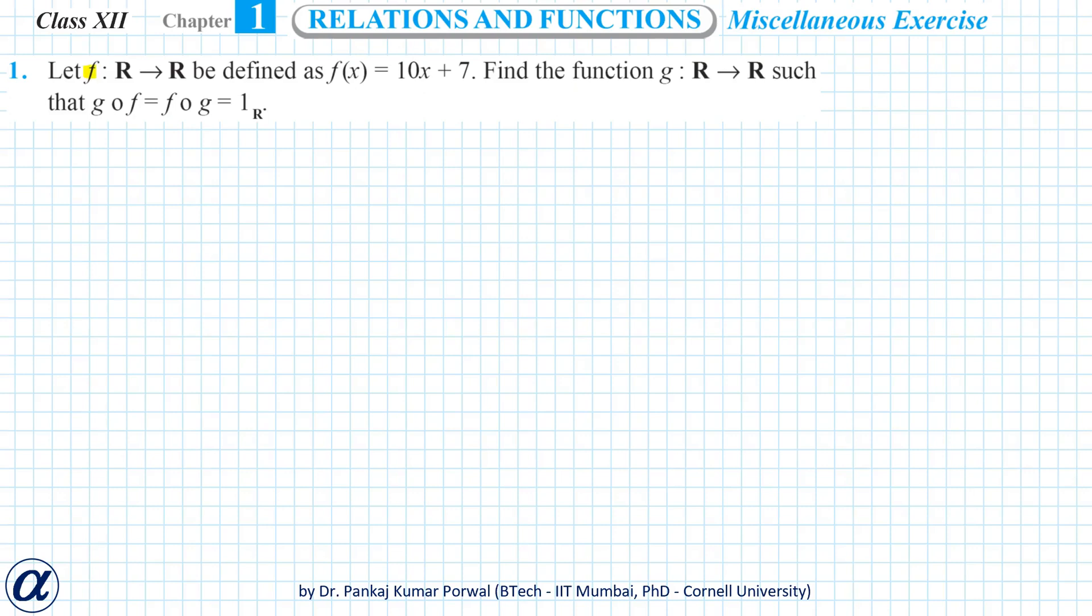In this question, we are given a function f from R to R defined as f(x) equals 10x plus 7, and we want to find a function g from R to R such that g of f equals f of g equals the identity function on R.